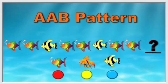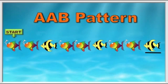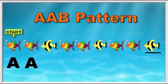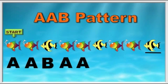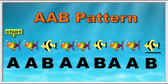Let's see if you're right. Let's try the stripe fish. Let's start here. This time we're going to say the letter for the picture: A, A, B. A, A, B. A, A, B. We said AA because the first two fishes were the same. The third fish, which is the stripe fish, was different.